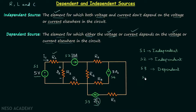Moving on to our fourth source, S4 is a voltage source giving 3 times V2 as voltage. Here, V2 is deciding the final voltage, so the voltage provided by the source depends on the voltage present in another part of the circuit. Therefore, S4 is also a dependent source.